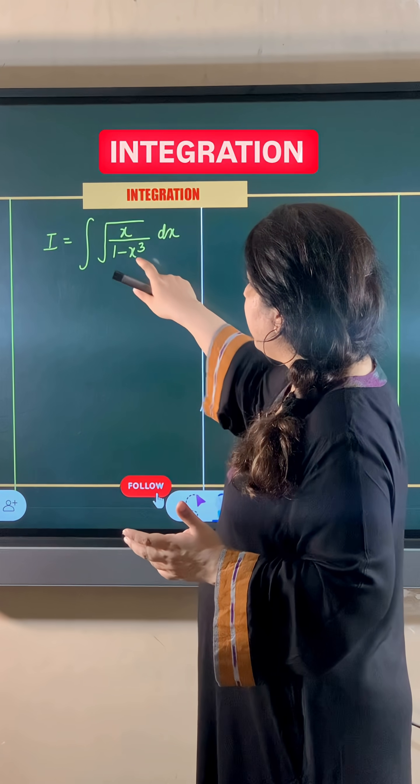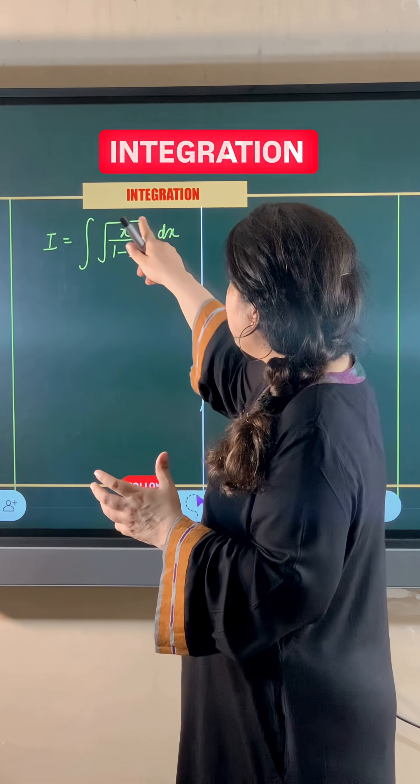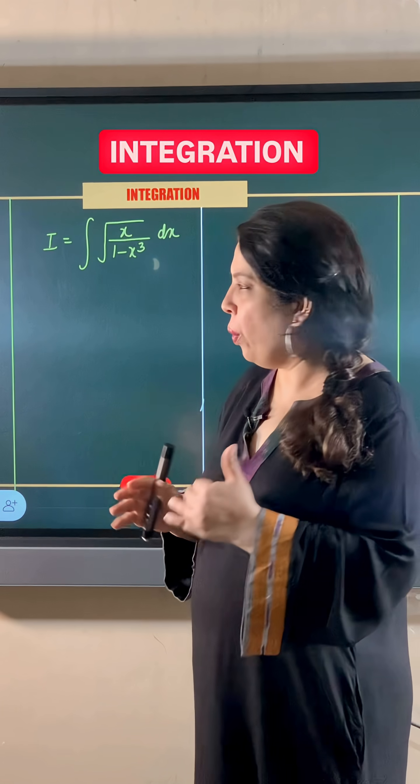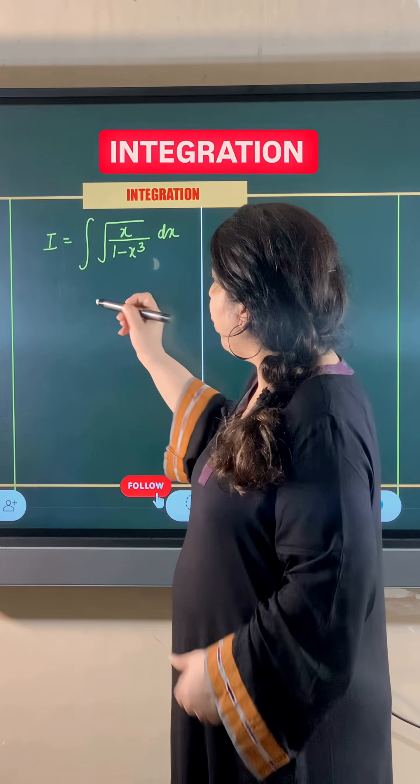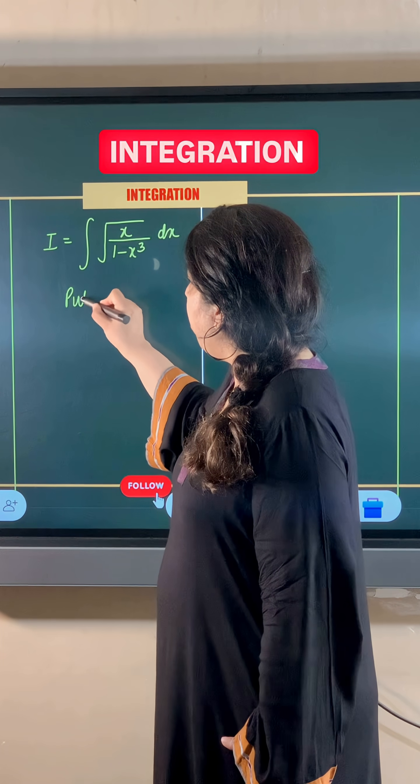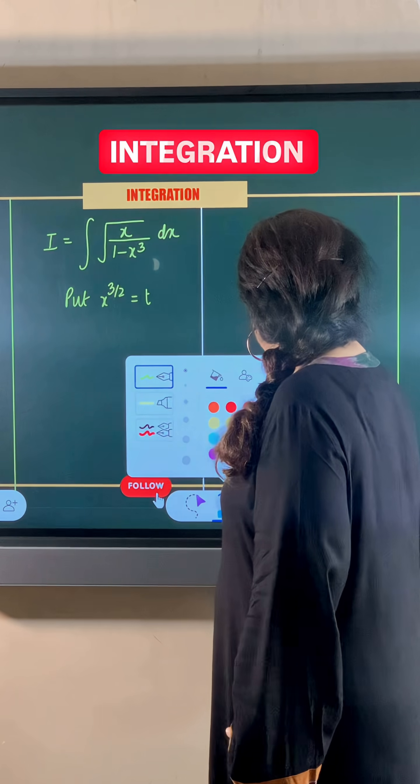What I am going to do is, there is x to the power 3 in the denominator and there is also root along with it. Though the root cannot be separated with both these terms, I am going to put x to the power 3 by 2 is equal to t. This is going to be my substitution.